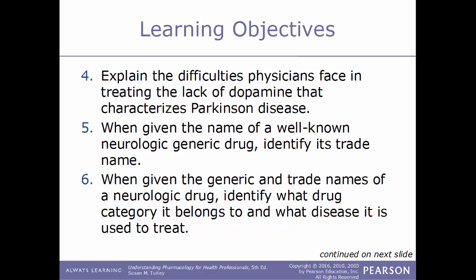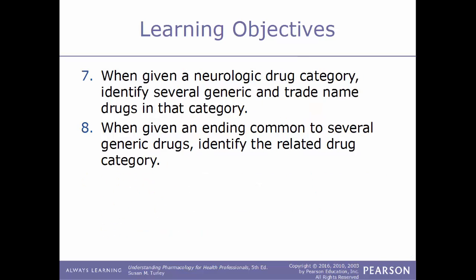Explain the difficulties physicians face in treating the lack of dopamine that characterizes Parkinson's disease. When given the name of a well-known neurologic generic drug, identify the trade name. When given the generic and trade names of a neurologic drug, identify what category it belongs to and what disease it's used to treat. When given a neurologic drug category, identify several generic and trade name drugs in that category. And lastly, when given an ending common to several generic drugs, identify the related drug category.